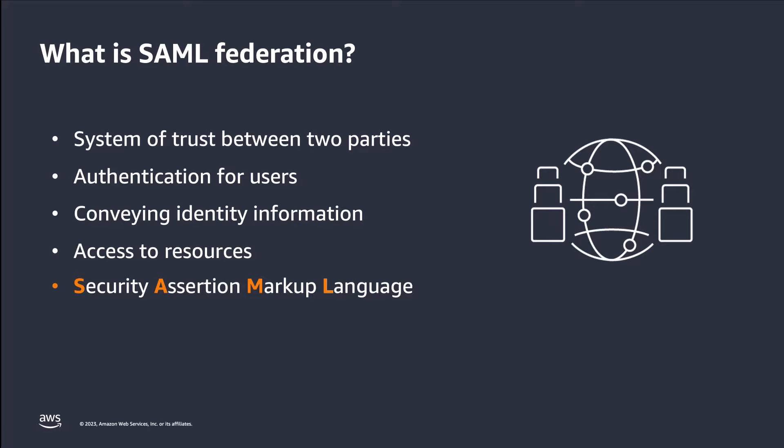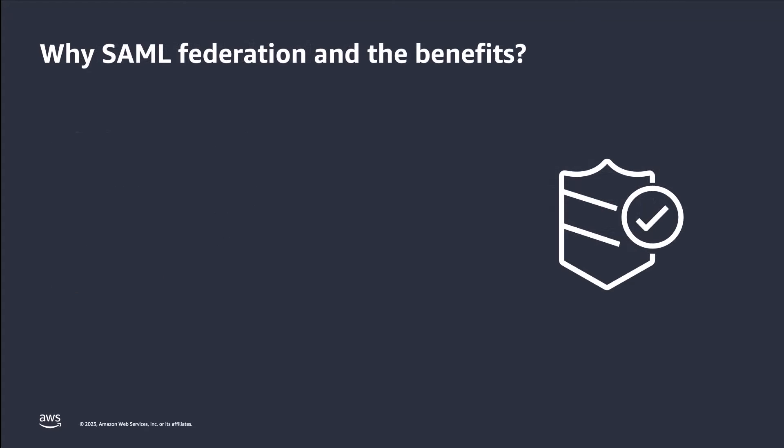After successful authentication, the identity provider sends the service provider a message called an assertion. The assertion contains the user's account name and other attribute data that the service provider uses to help determine the scope of access that the service provider should grant.